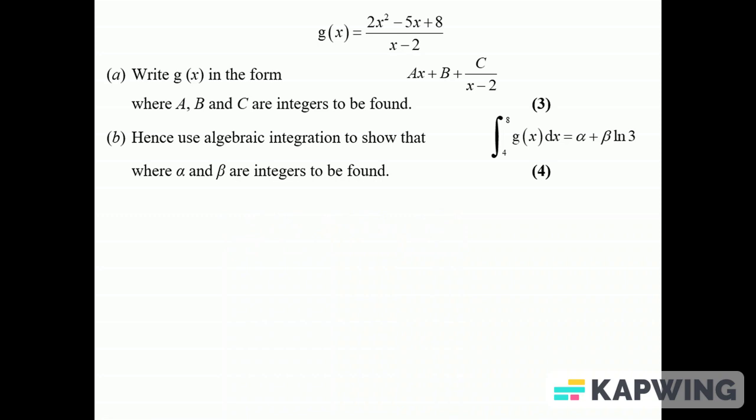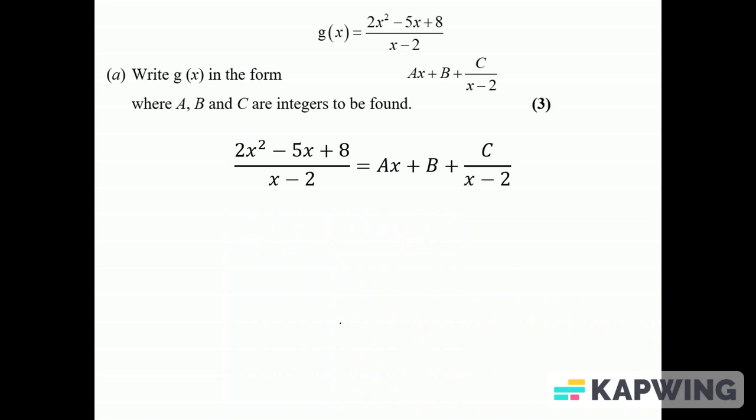So really something we'll do long division. I'm going to use the tried and trusted just flipping look at it method. So I'm going to multiply by x - 2 on both sides. So I'll get the numerator on the left hand side is Ax + B times (x - 2) plus C.